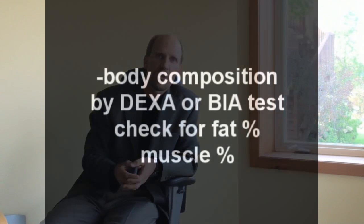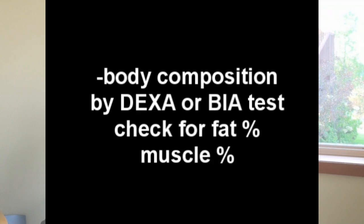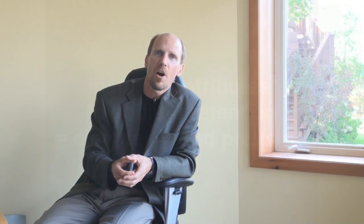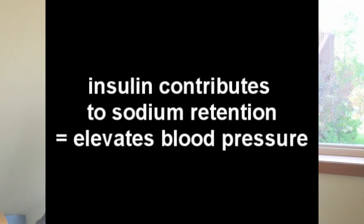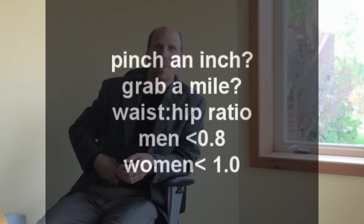I recommend getting a body composition done through a BIA or DEXA scan, which looks at your percentage of body fat and tells you what stage you're progressing down this road. Elevated body fat is not a good sign. Also, insulin can cause sodium retention and elevates your blood pressure, so your doctor should check that too. Another simple test: can you pinch an inch, or do you grab a mile? That's the waist-to-hip ratio — a good marker of where your body is laying down fat. Elevated insulin causes fat deposition around the midsection; belly fat — cortisol contributes to this as well.